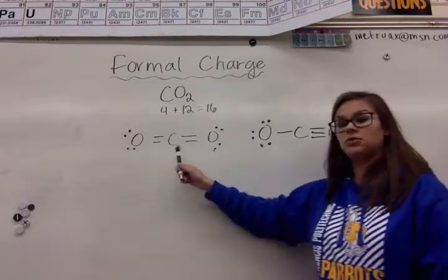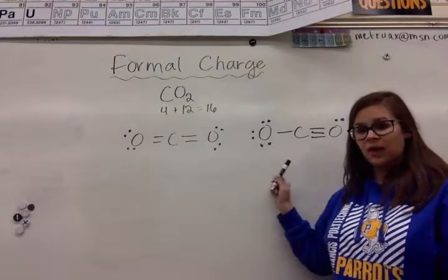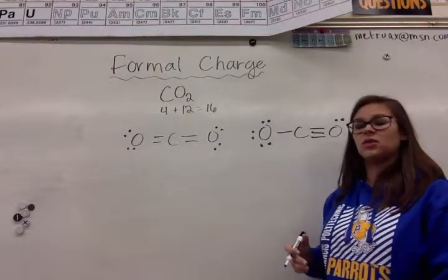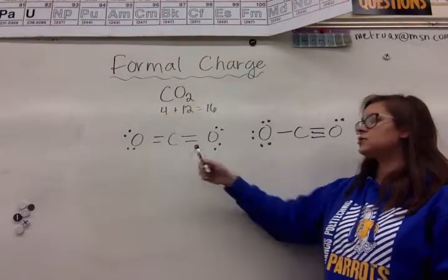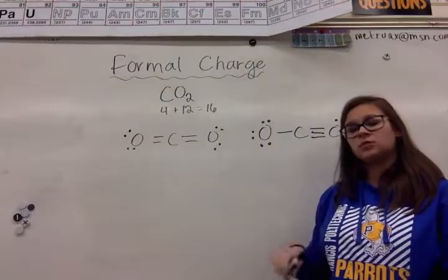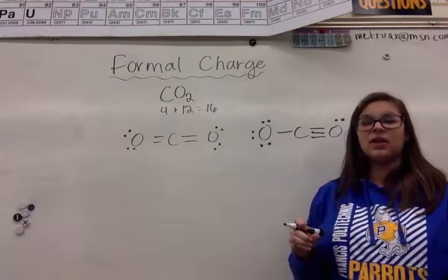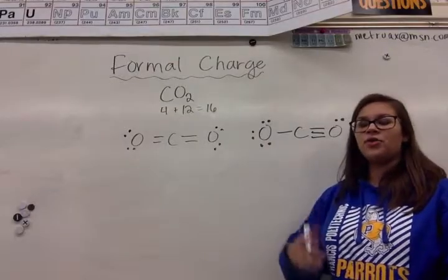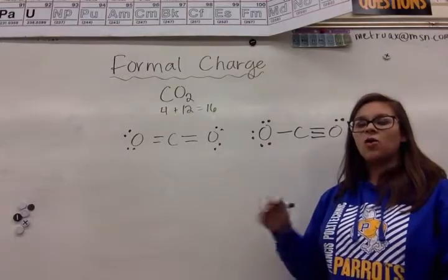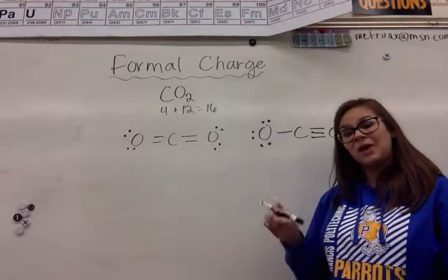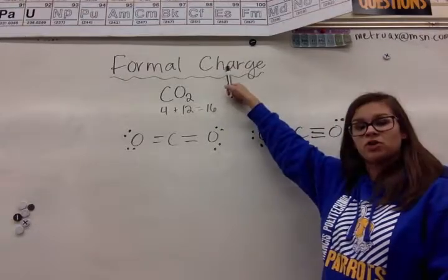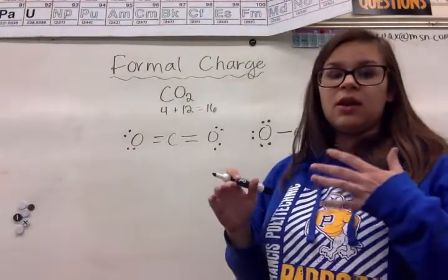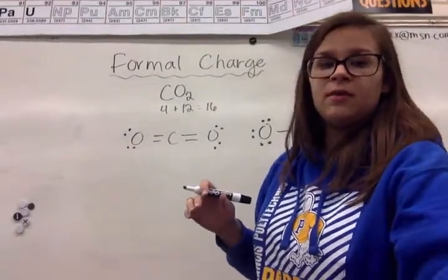So why do we always draw CO2 this way and never this way? And the answer is formal charge. By the way, this does like to show up as a question on the free response. They love to give you 2 structures, ask you to pick which one is more accurate, and give an explanation. When you're choosing between 2 different structures that are both full octets and they both satisfy all the requirements, the only way to figure out which one is better is through the formal charge. Now there's a formula to calculate the formal charge of an element in a molecule.